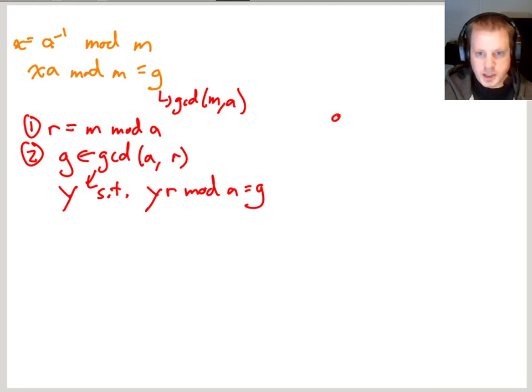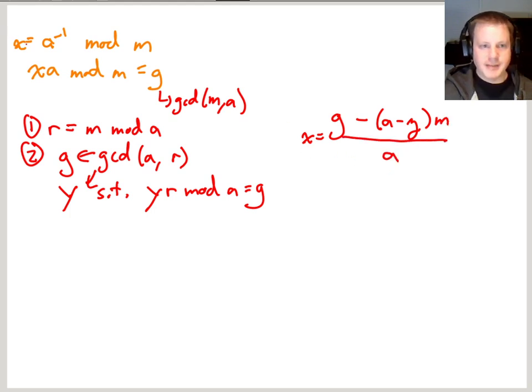is g, what we're going to set is x equals g minus A minus y times M all divided by A. And the question is, why does this x work up here? Why does that actually line up?